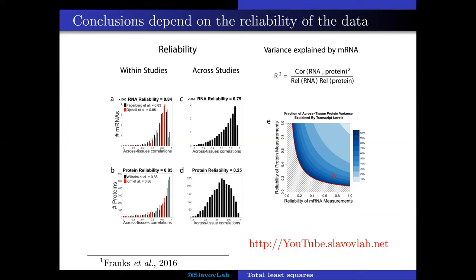And when we do this analysis, we estimate empirically what is the reliability of both messenger RNA levels and protein levels. And as you can see in panel E to the right, the result from this analysis,